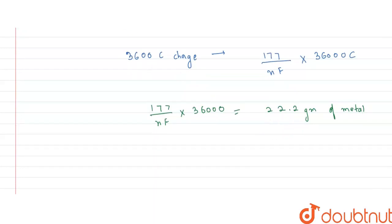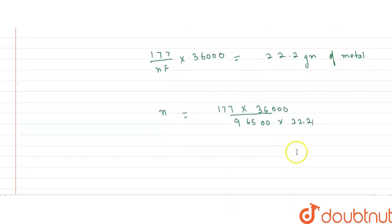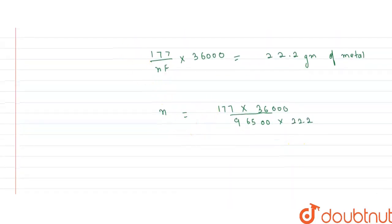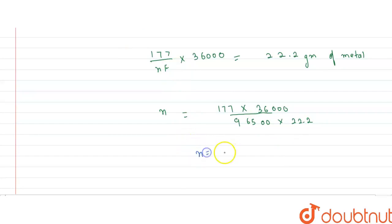Now from here I can easily find the value of n. So n will be equal to 177 into 36,000 divided by F, which is Faraday. We know that its value is 96,500, multiplied by 22.2. So on solving this we get the value of n to be equal to 2.97, or I can round off this value to 3.